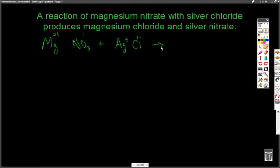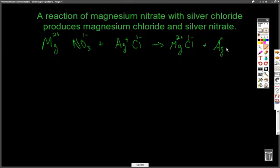What we get out of that is magnesium chloride — magnesium has a plus 2 and chlorine has a one-negative charge. And lastly, silver nitrate, with silver being a plus 1 and nitrate being a one-negative charge.